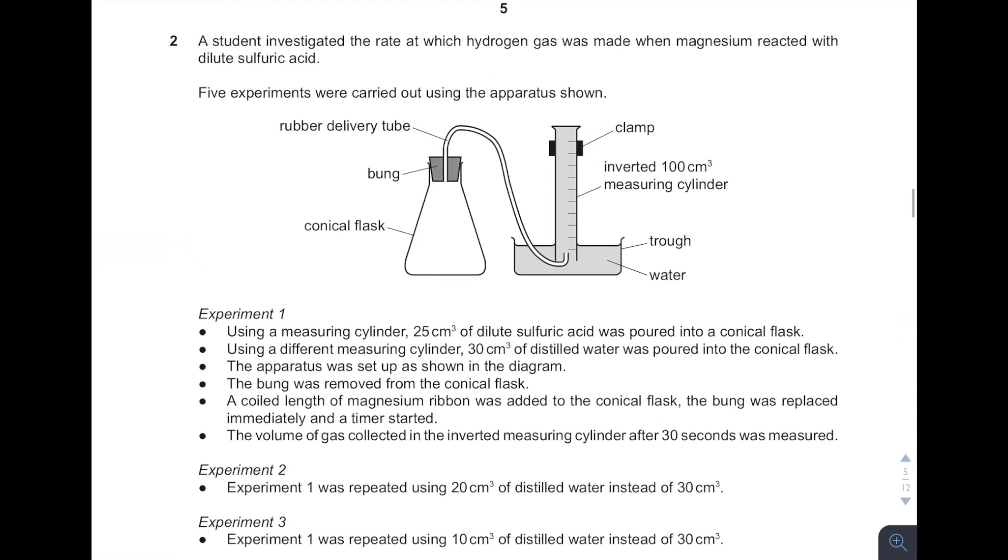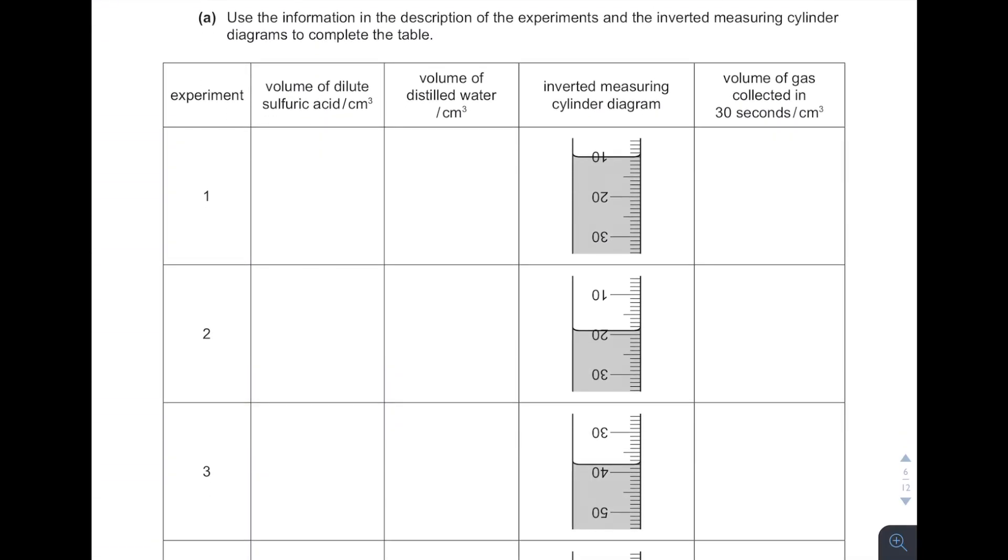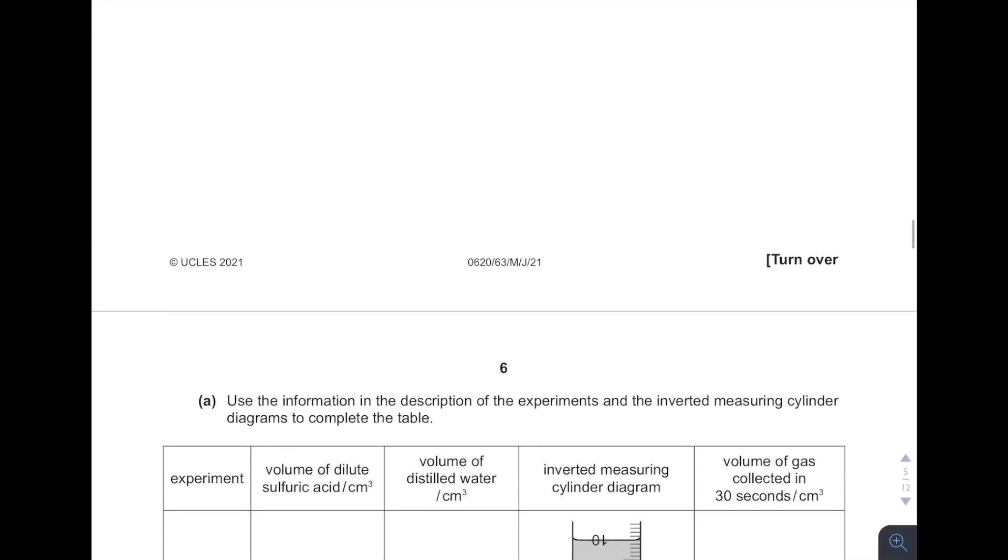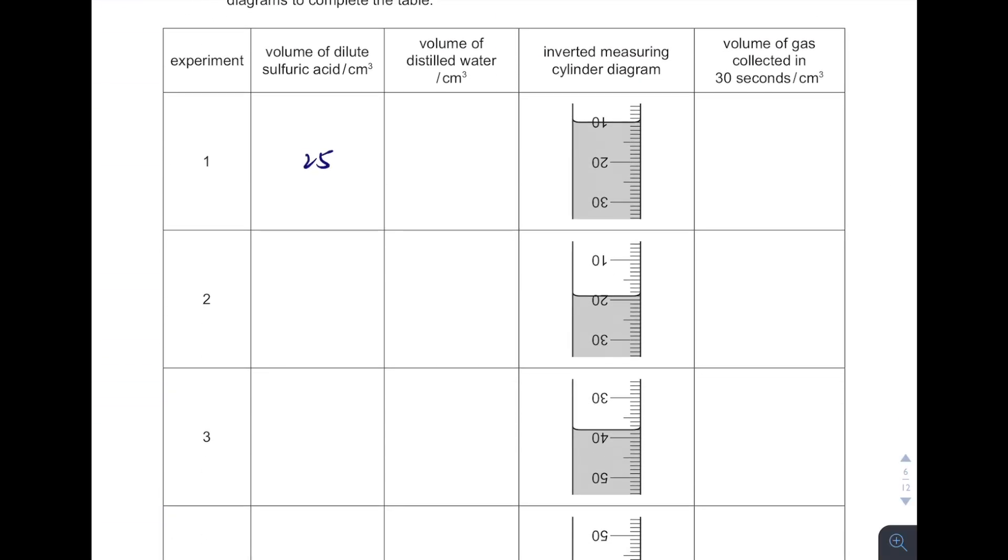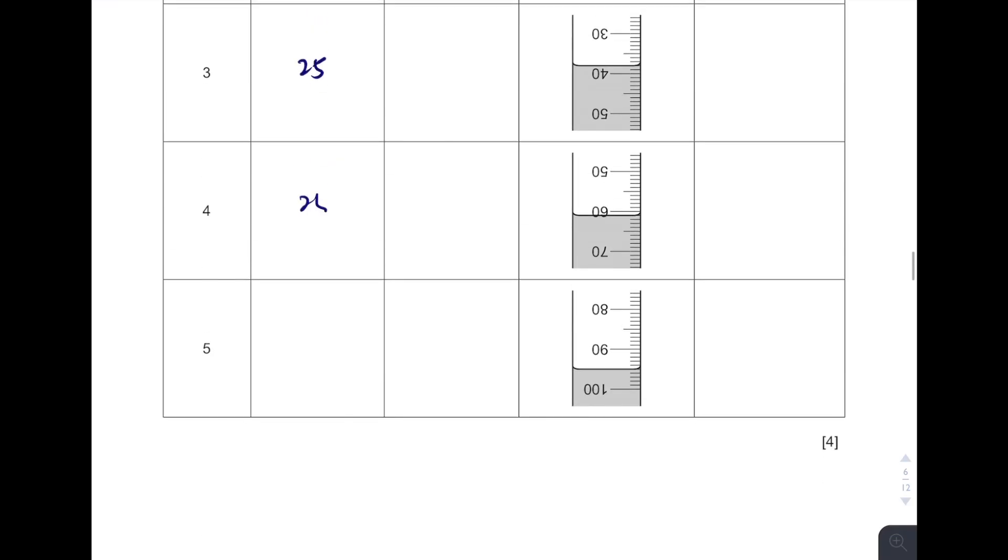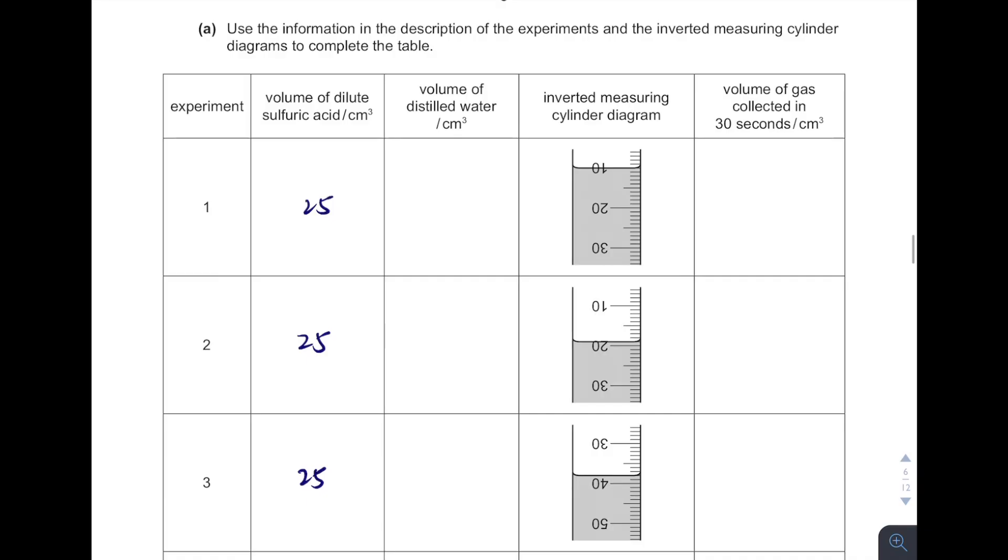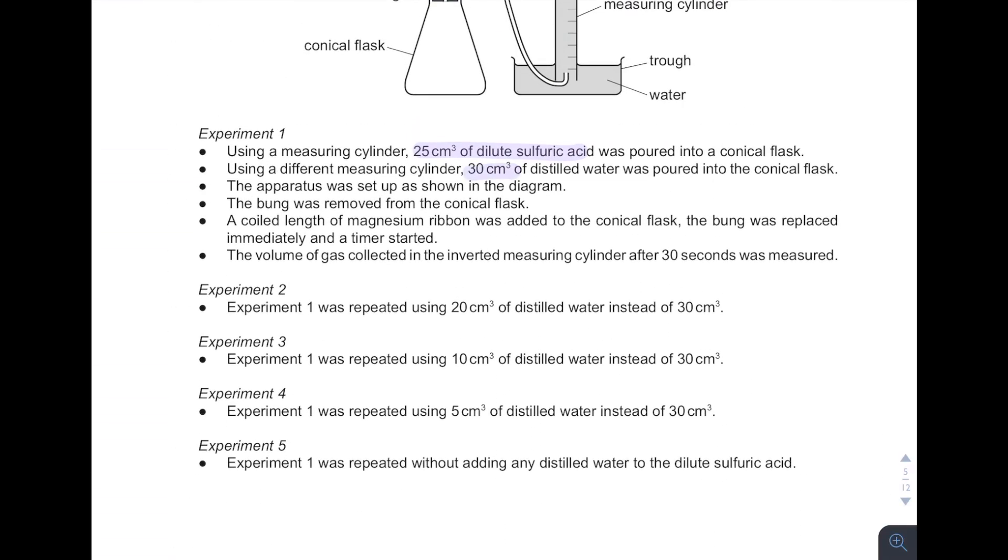And then next one. See, give me this experiment. Investigate the rate at which hydrogen gas was made when magnesium reacts with acid. So let's look at this. Volumes of acid, it's mentioned here the acid is 25 cm³. And then the experiment, they repeated using different volumes of water. So from here, 25, and then volumes of distilled water, same thing, see everything given here. 30, 20, 10, 5, and nothing.